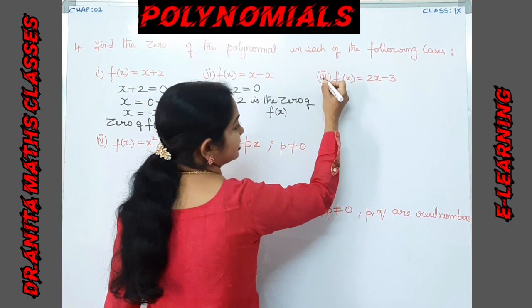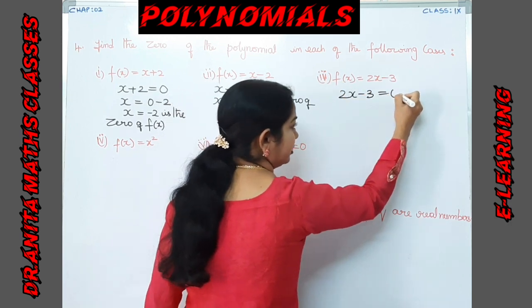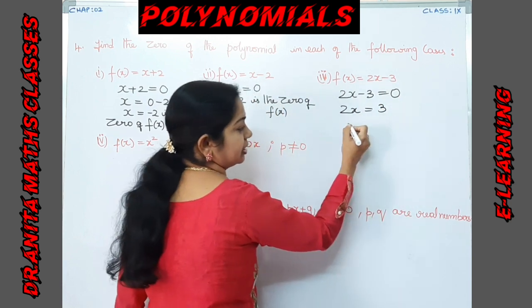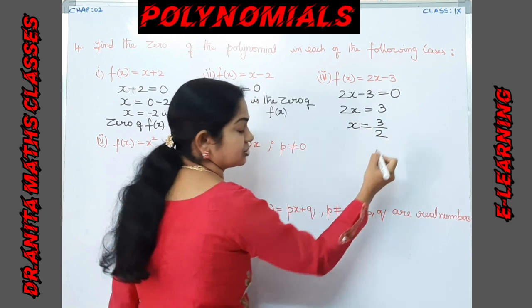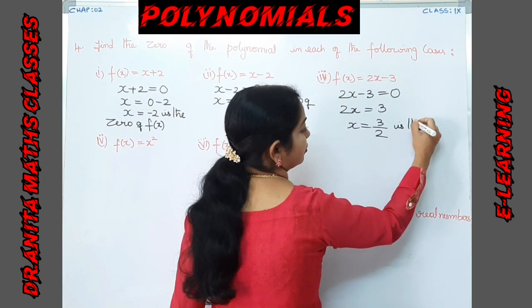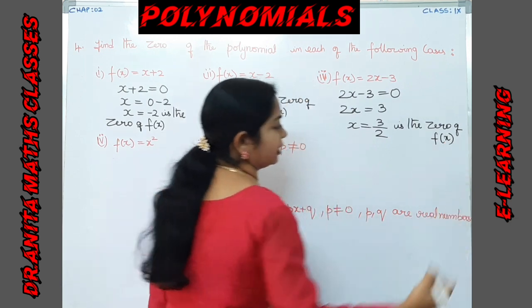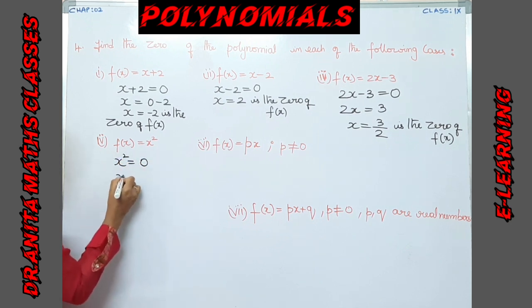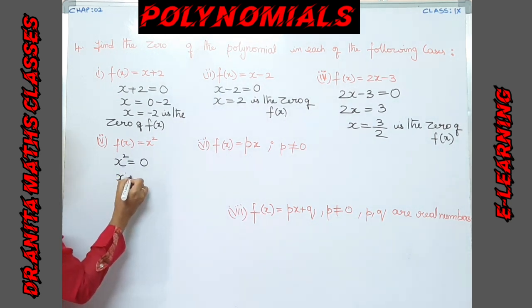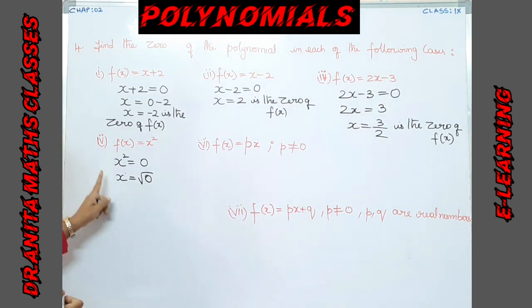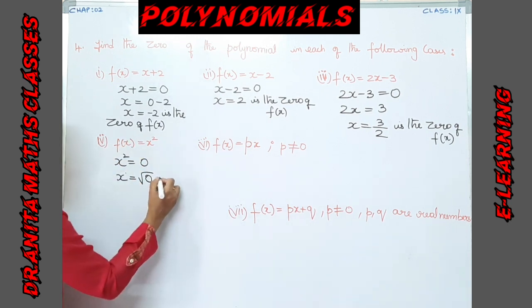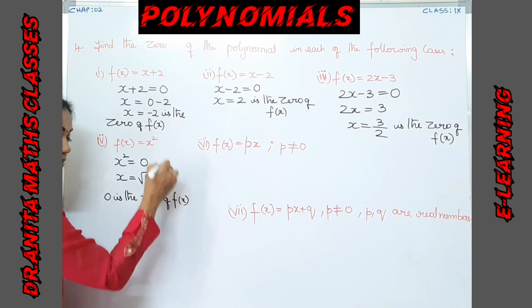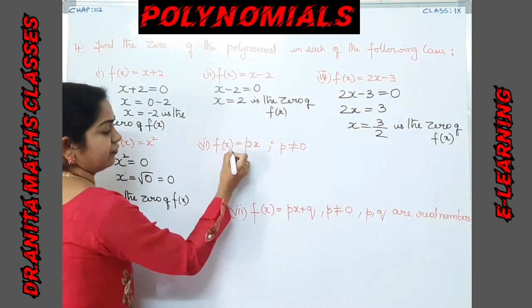The third bit is given for you to practice. For the fourth bit, the polynomial is f(x) = 2x - 3. Equating to 0: 2x = 3, so x = 3/2. That is the zero. For the fifth bit, f(x) = x². Equating to 0: x² = 0, so taking square roots of both sides, x = 0. Therefore, 0 is the zero of f(x).